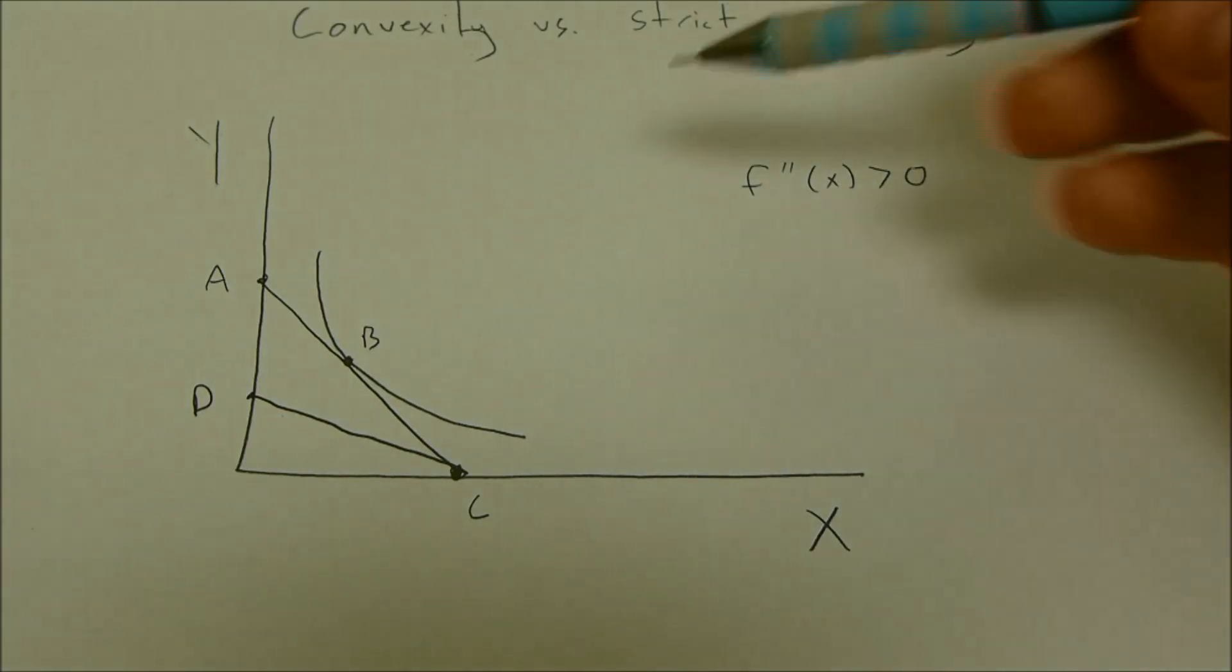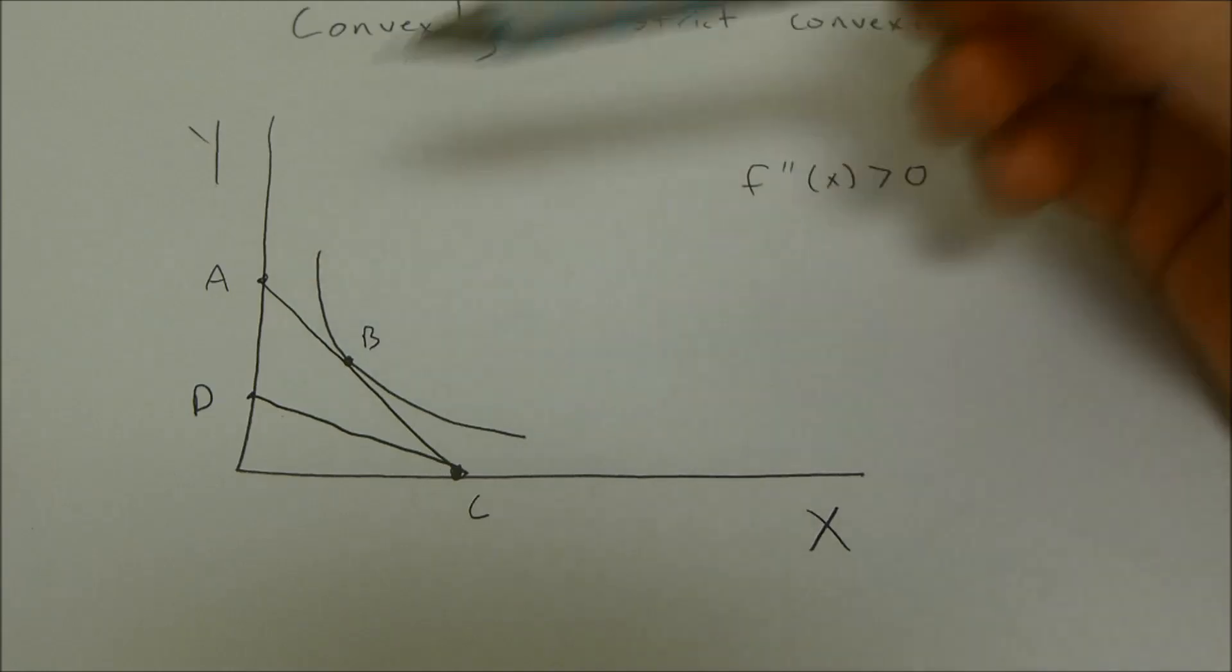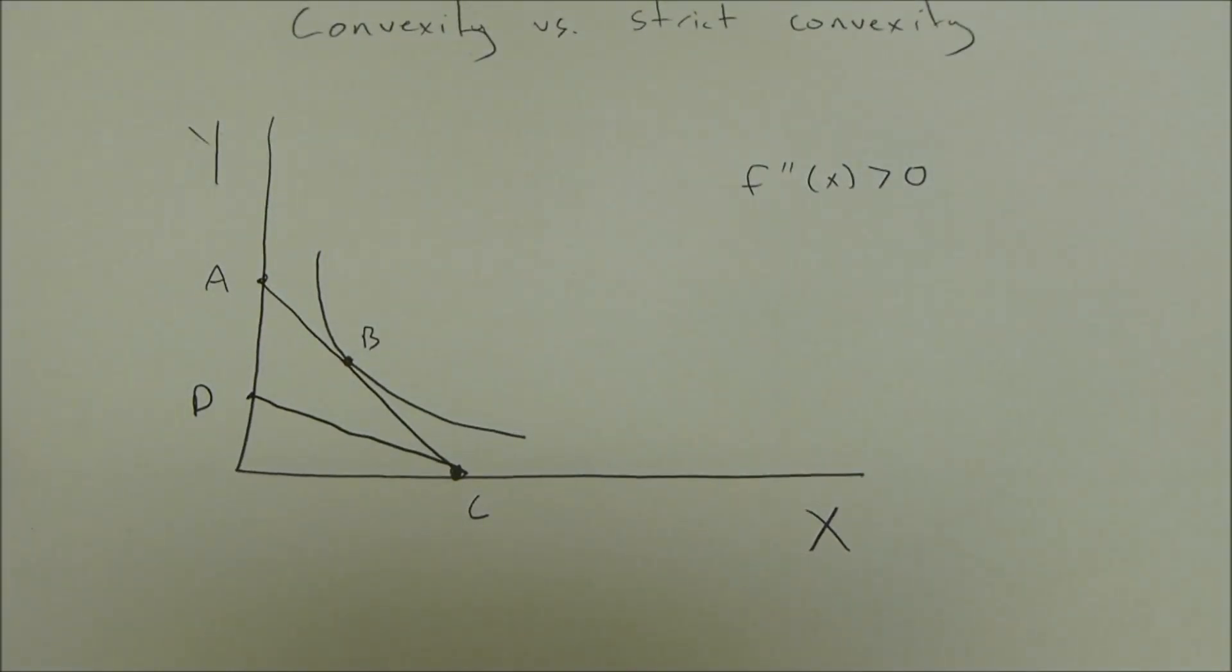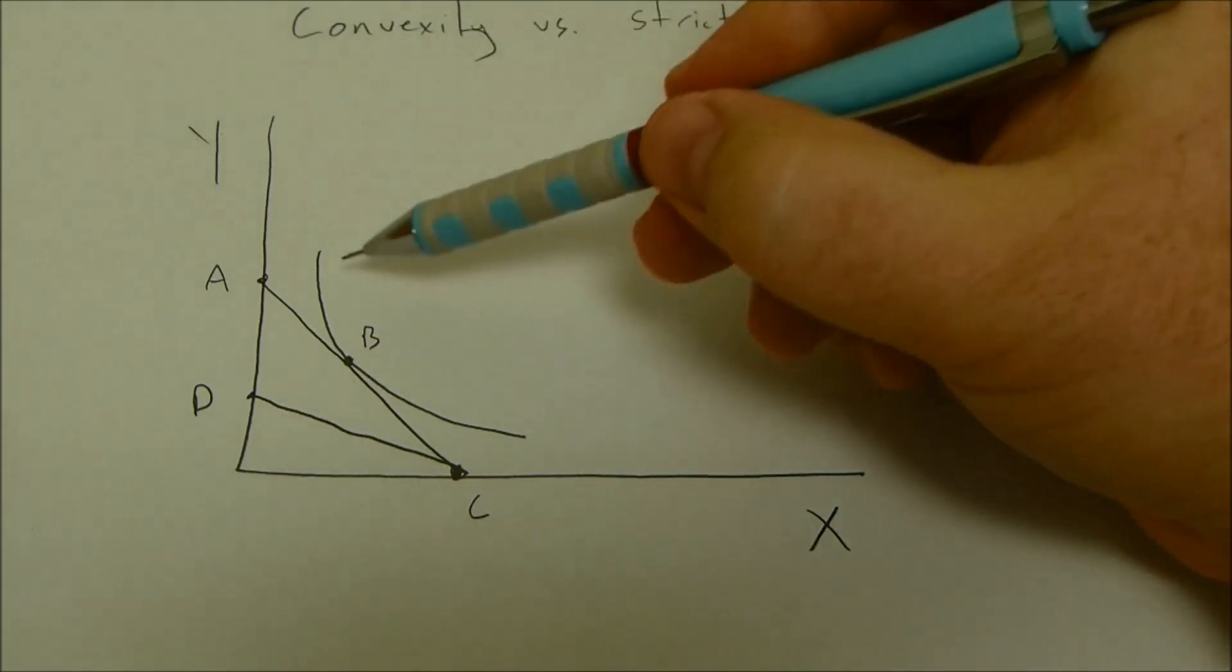If it's equal to zero, then that implies that the line can be straight or linear, there's no slope associated with it. So in layman's terms, a curve with strict convexity is going to have a slope.